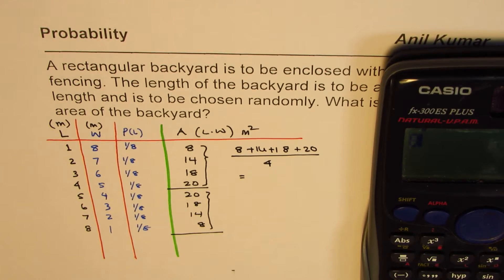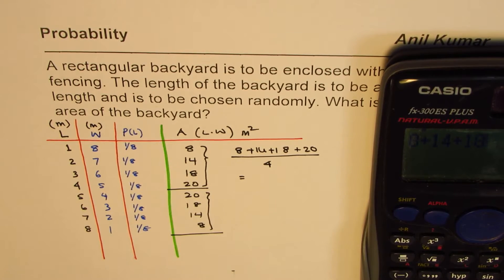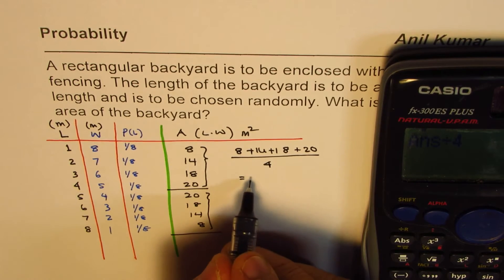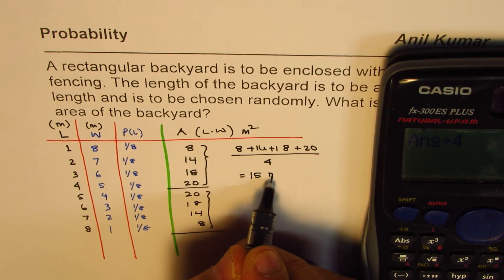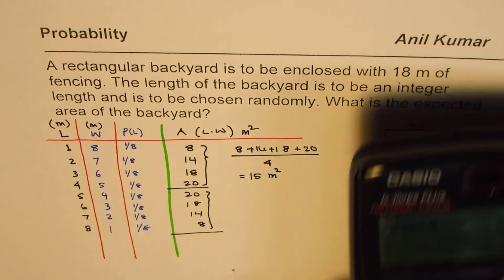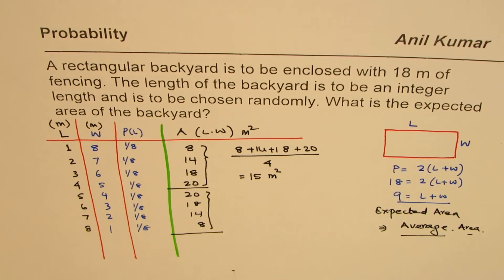So we will do 8 plus 14 plus 18 plus 20 equals and divide by 4 equals 15. So we get 15 units of meters squared. So that is how we will find it.